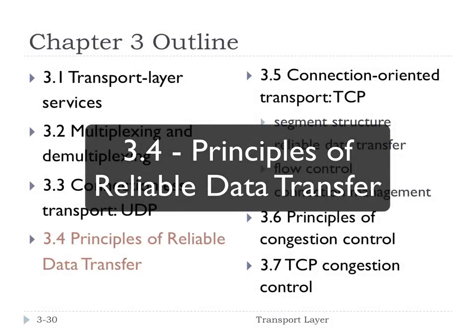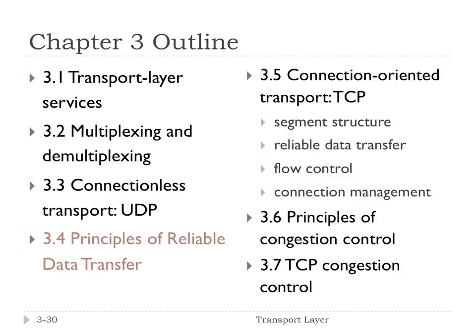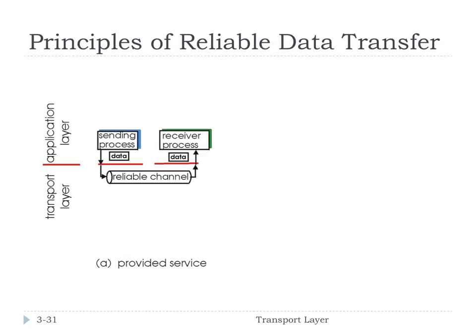Today we're going to talk about section 3.4, which is the principles of reliable data transfer. This whole section is about how we can transfer data from one point to another point and make sure that all the data actually gets there in a reliable way — we can depend on the communication. This question is made even more difficult and more interesting when the communication layer is unreliable: when the link between the two endpoints may lose packets or duplicate packets, how do we make sure we get data transferred reliably over that link?